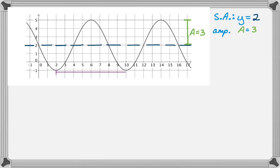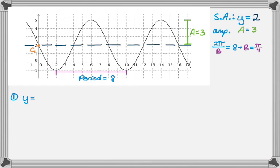Next I need the period. Going from minimum to minimum, the period is 8 — that's 10 minus 2. Solving for b: 2π over b equals 8, which means b equals π over 4. Now I'll choose a starting point on the y-axis. It's an intercept, and the graph goes intercept, minimum, intercept, maximum, intercept — that's a negative sine graph. So we get y equals negative sine of (π/4)(x), plus 2.